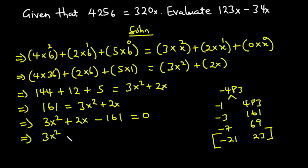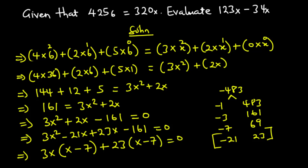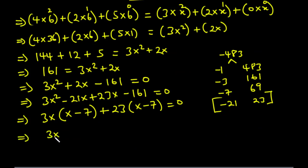So we rewrite the equation as 3x squared minus 21x plus 23x minus 161 equals 0. Grouping: the LCM of 3x squared and negative 21x is 3x — giving 3x(x minus 7). The LCM of 23x and negative 161 is 23 — giving 23(x minus 7). So we have (3x plus 23)(x minus 7) equals 0.